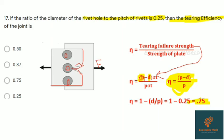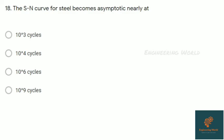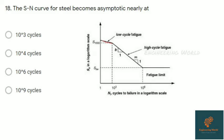Question eighteen: The S-N curve for steel becomes asymptotic nearly at 10^6 cycles. It is assumed to be at 10^6 cycles.